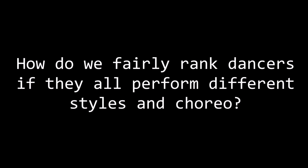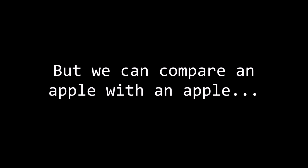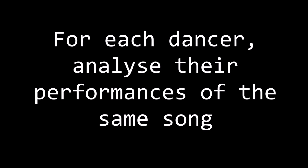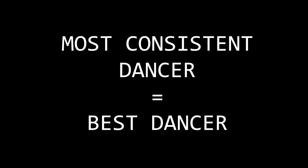But the question is: how do we rank the dancers if they all perform different styles and choreography? Simple — we don't. We can't compare an apple with an orange, but we can compare an apple with an apple. In other words, for each dancer we can analyze their performances of the same song, and then use our machine learning app to check how consistent they are between performances. We can then compare the consistency rates between each dancer and ultimately find out who's the most consistent main dancer.